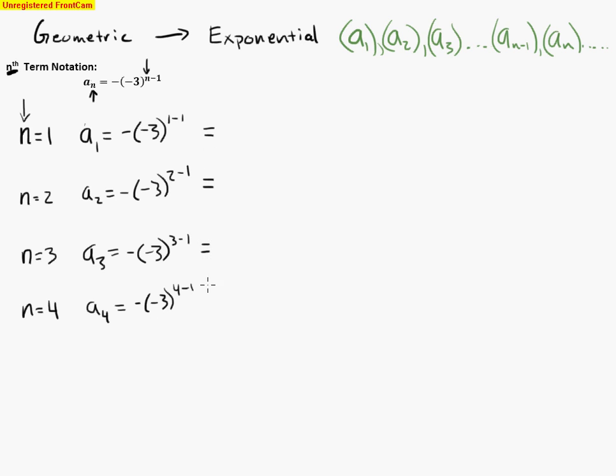Let's go ahead and evaluate these. I'm going to skip a little step here, and I'm going to simplify these things right here. 1 minus 1 is the same thing as 0. 2 minus 1 is the same thing as 1. 3 minus 1 is the same thing as 2. And 4 minus 1 is the same thing as 3.